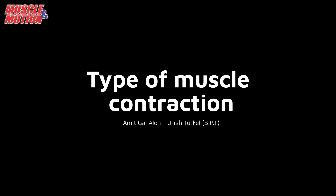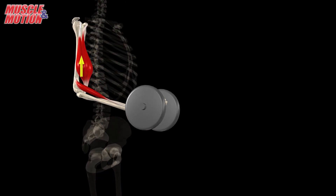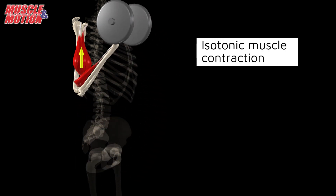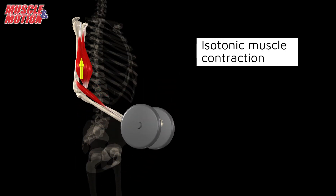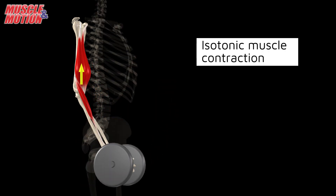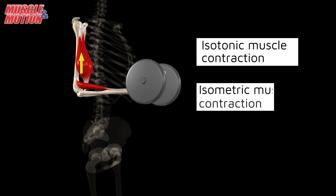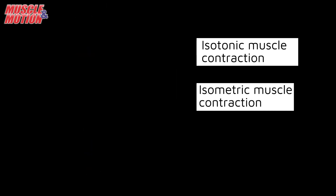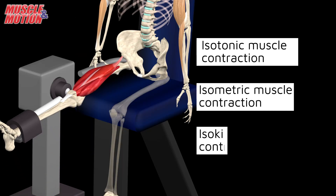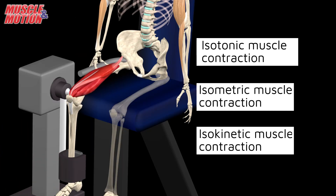There are three general types of muscle contraction that help us produce different movements: isotonic muscle contractions, isometric muscle contractions, and isokinetic muscle contractions.